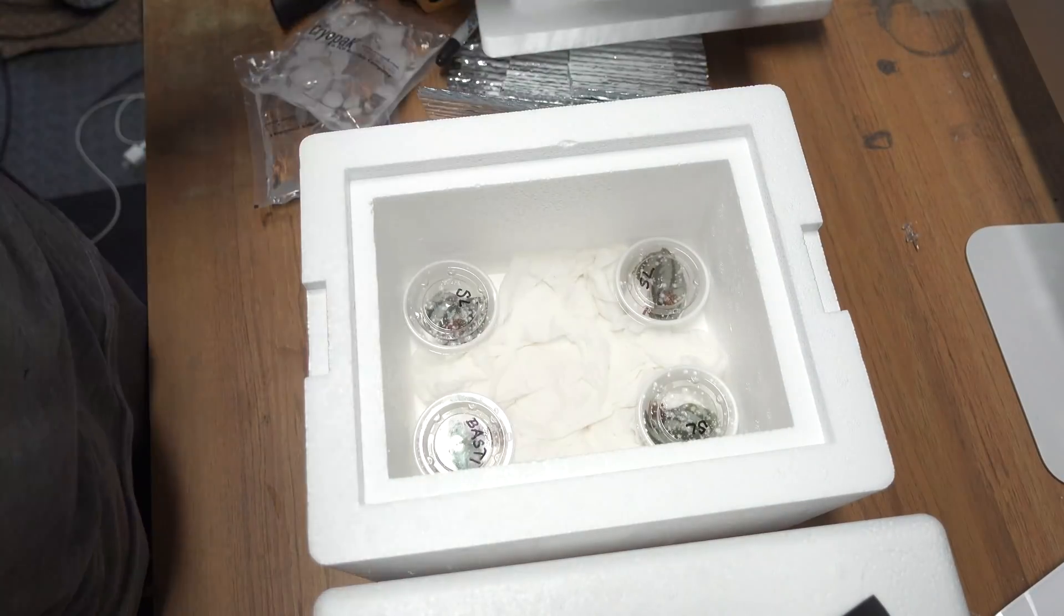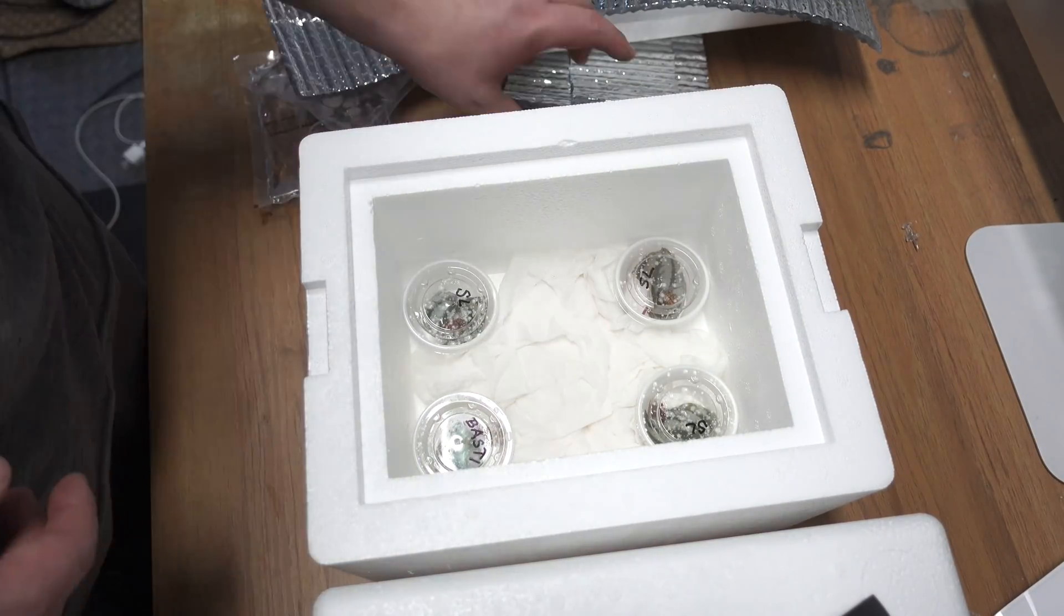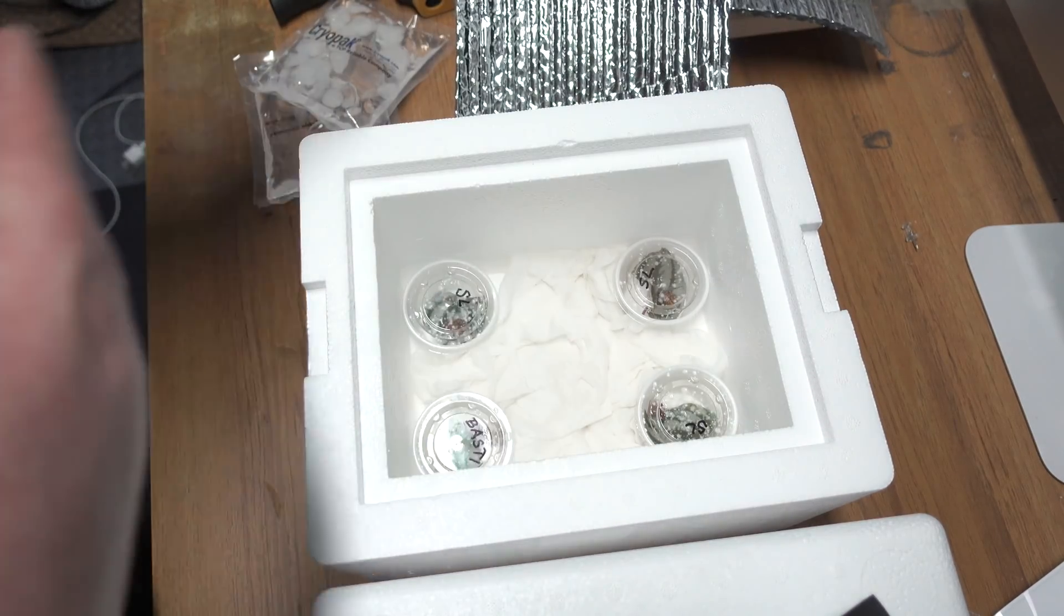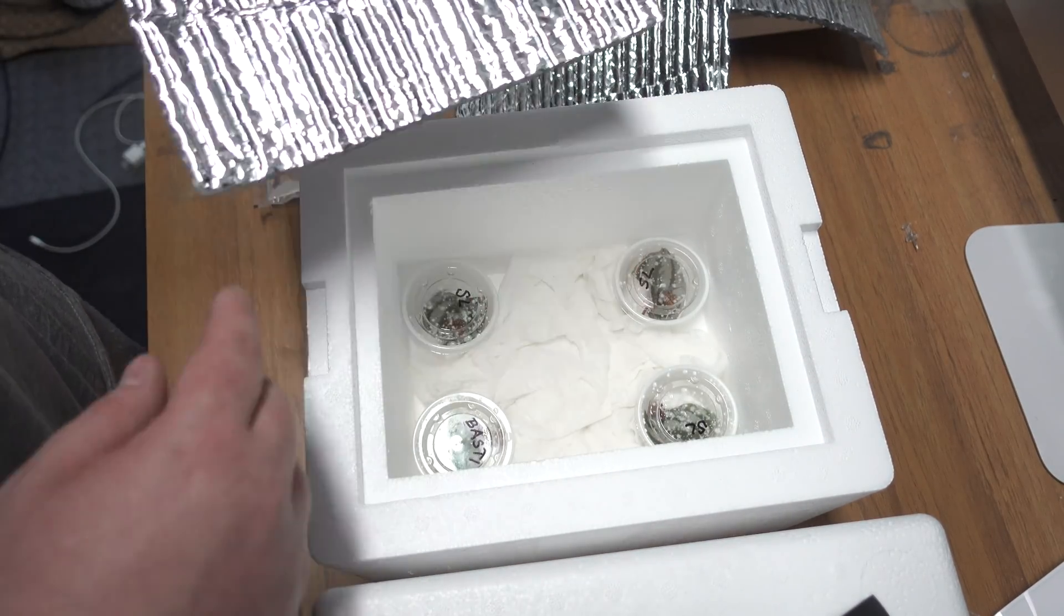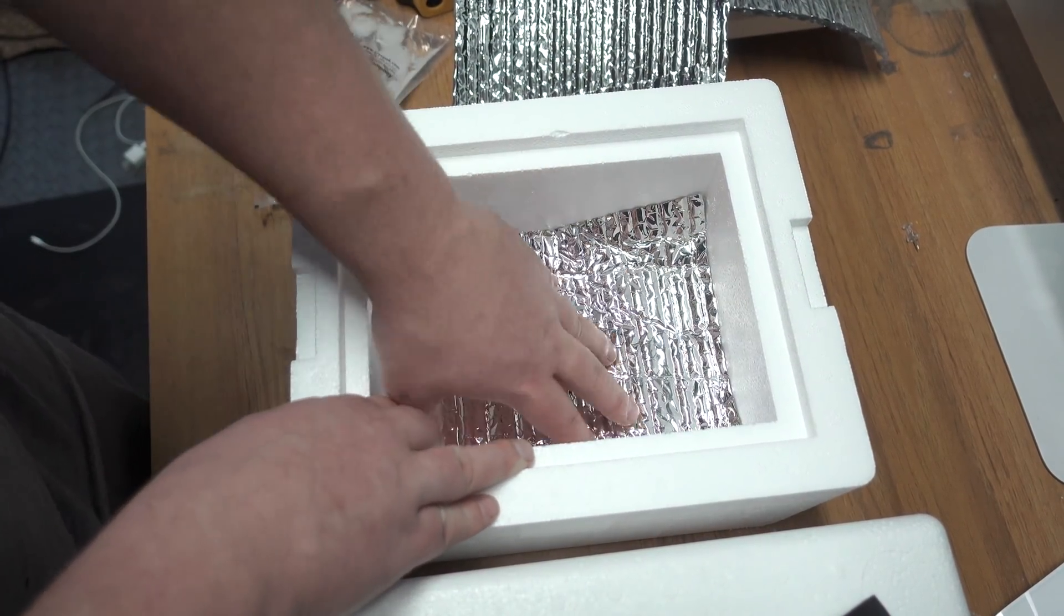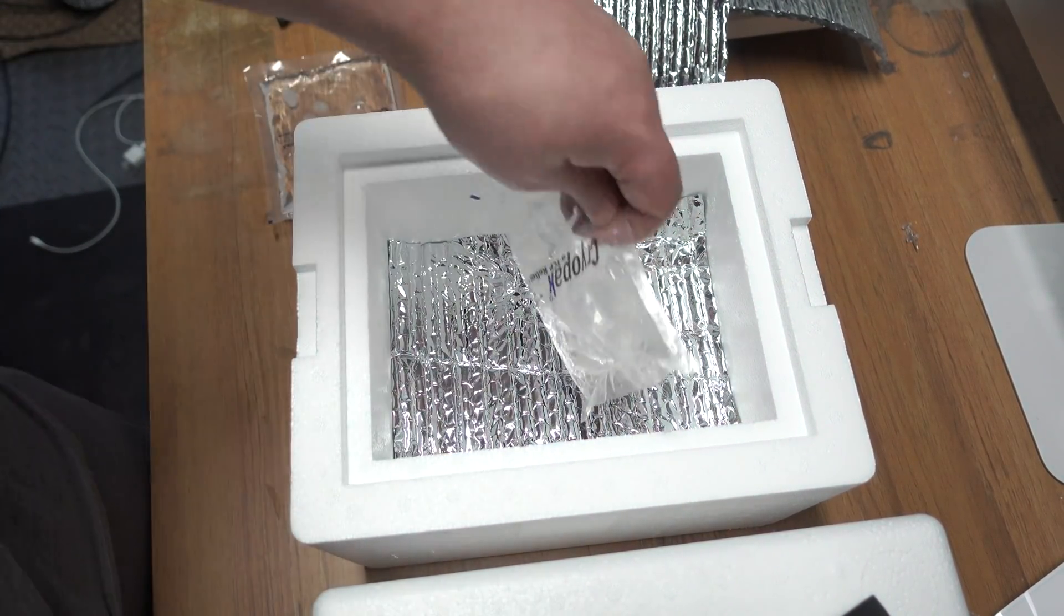Now you're going to take a layer of the thermal bubble wrap. I'm checking to see which size I want to use first. So this one looks good. So I'm just going to place it down on top of the frogs. You don't need to push it down super tight but I just want it nice and snug.